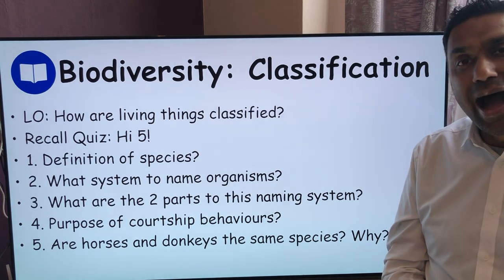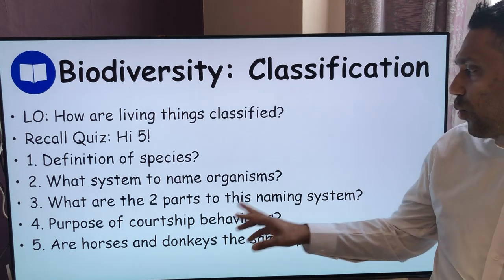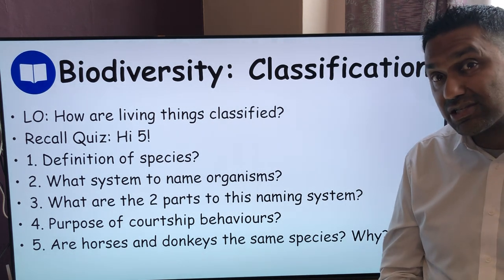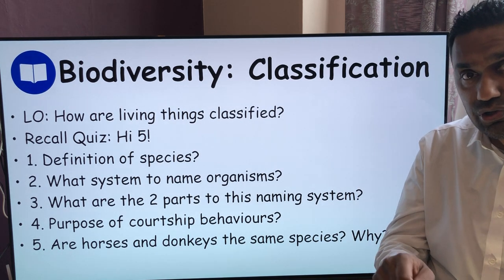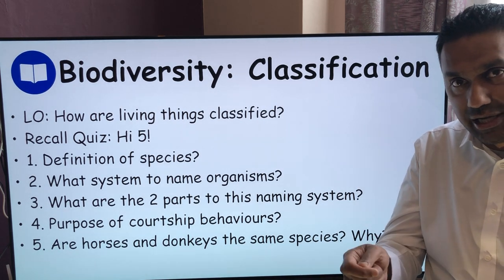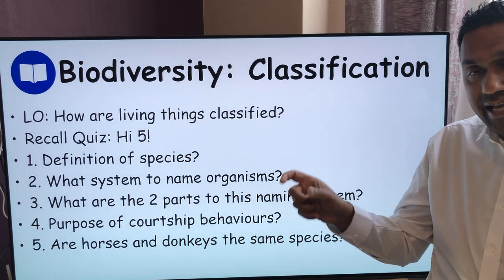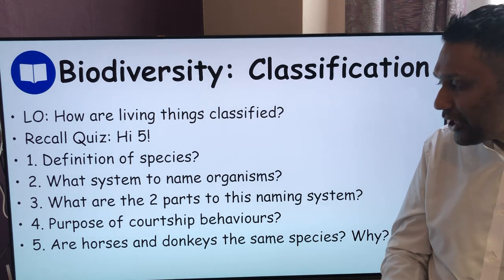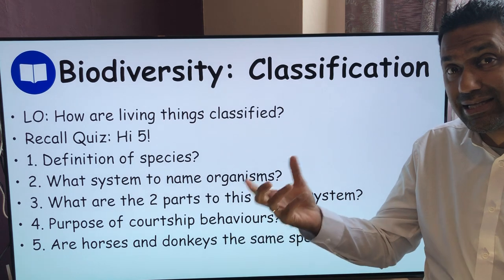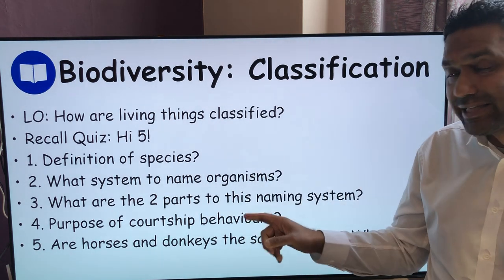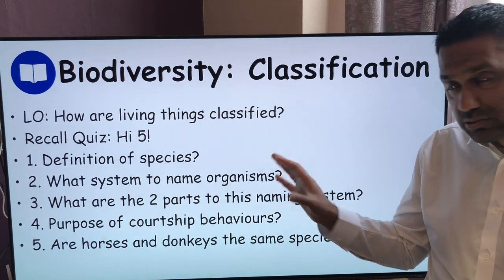What system do we use to name these organisms? We call it the binomial system. What are the two parts of the binomial system? You name it with two names: you have the genus name — or generic name — as the first name, and then the second part is the species name. The binomial name is written in italics, the first name starts with a capital, and the second name is all lowercase.